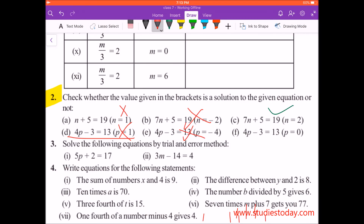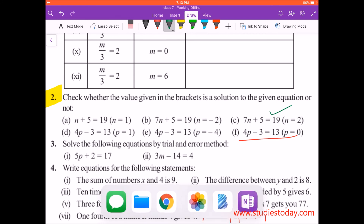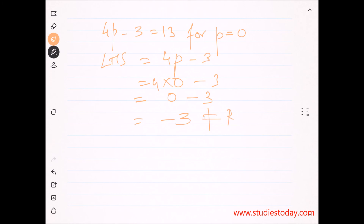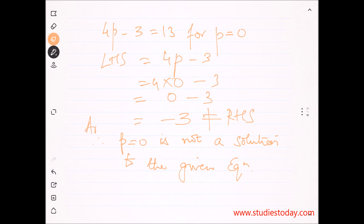Yeh bhi galat diya hua hai. Next: 4P minus 3 equals to 13, for P equals to 0 — part (f). Thoda fast chaltein hain: 4 into 0 minus 3. 4 into 0 is 0, and 0 minus 3 is minus 3 — jo 3 nahi hota, minus 3 hi rehta hai. Yeh RHS ke neeche nahi aaya. Therefore P equal to 0 is not a solution to the given equation. Answer statement likhna bahut zaroori hai, because that carries marks.